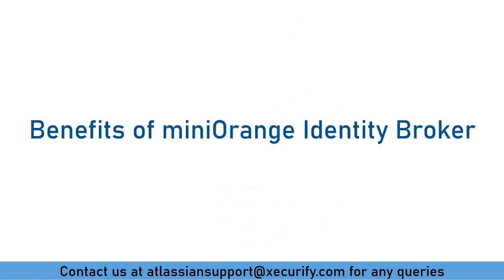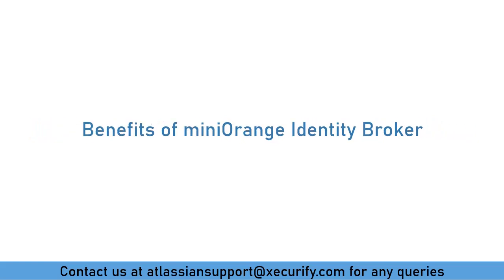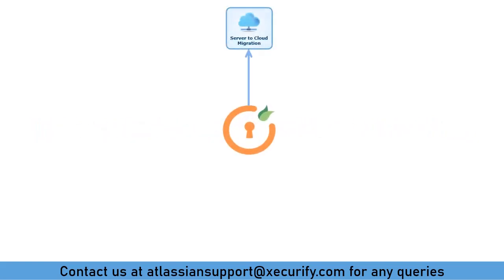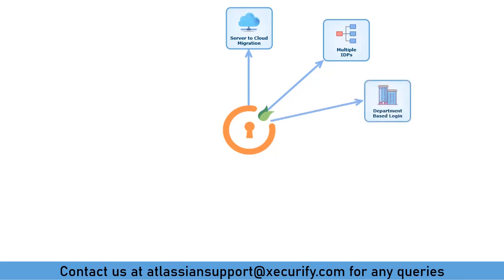Let's see a few benefits of Minirange Identity Broker. Easily migrate your server SSO settings into cloud. You can configure multiple identity providers to authenticate different types of users with different IDPs. Multiple department-based login allows users to redirect to their IDP based on their department. Domain mapping allows users to redirect to their IDP based on their email domains.